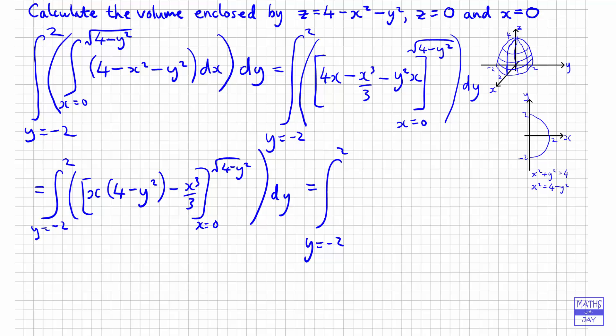So we've still got y equals minus 2 to 2 outside there. And now, substituting in the limits, instead of x, I'm going to have the square root of 4 minus y squared. So we're going to have 4 minus y squared to the power of a half times 4 minus y squared. In other words, that's going to be 4 minus y squared to the 3 over 2.